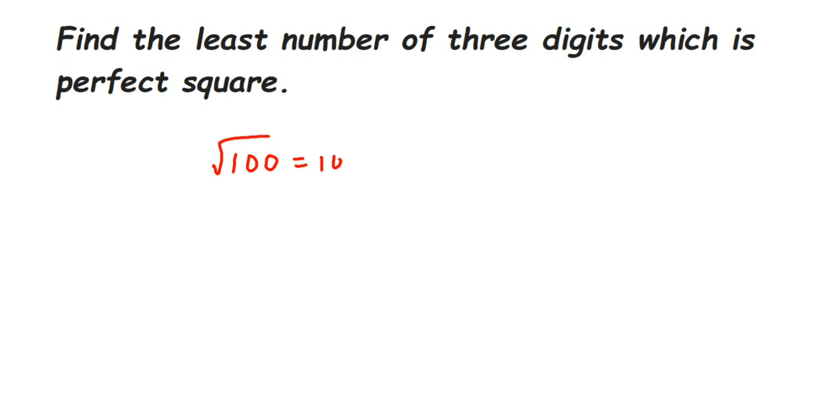Now we know that 9 square is equal to 81, and 10 square is equal to 100. Which means square root of 100 will be equal to 10. So 100 is a smallest three-digit number which is perfect square.